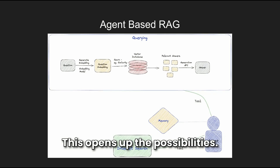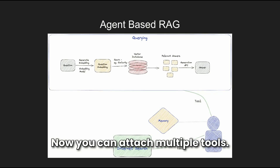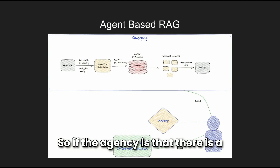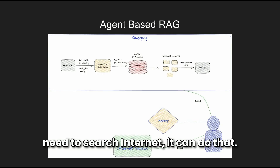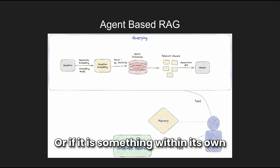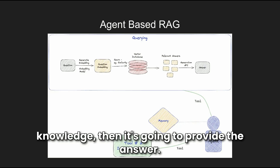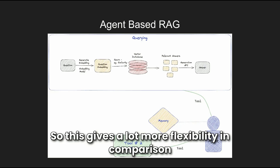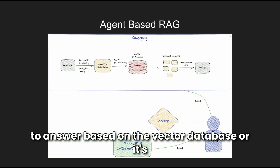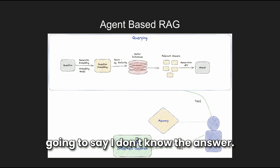This opens up a lot of possibilities. You can attach multiple tools — for example, an internet search tool. So if the agent sees a need to search the internet, it can do that. If it needs to call the vector database, it will. Or if it's within its own knowledge, it provides the answer. This gives far more flexibility compared to a plain RAG pipeline, where it either answers from the vector database or says 'I don't know.'